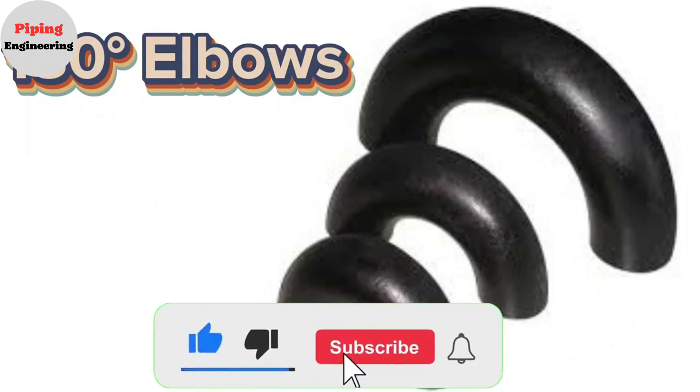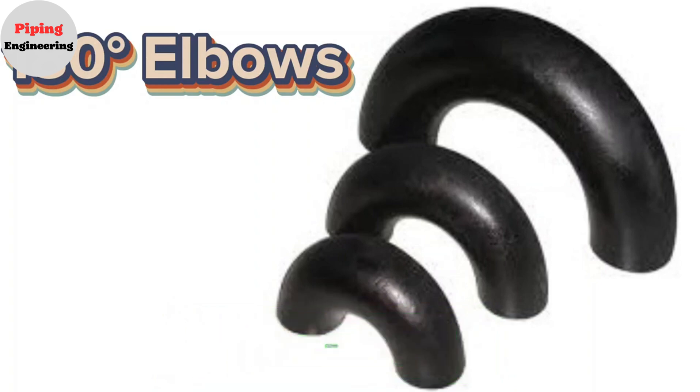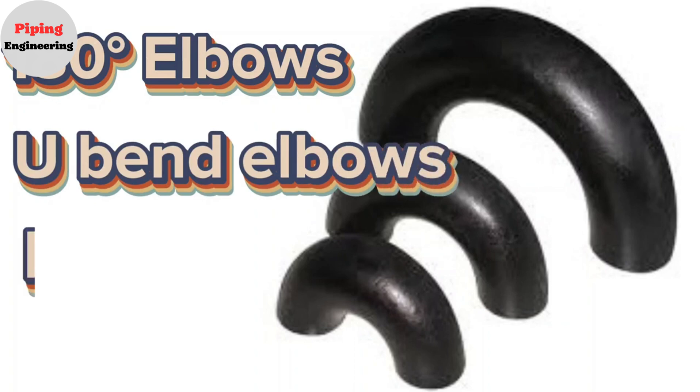180 degree elbow is like 45 or 90 degree elbow, but the flow direction change is 180 degree. It looks like the flow fluid get back to the same direction from the joint. The shape is like two 90 degree elbows welded together. It is also called U-bend or return bend elbow.